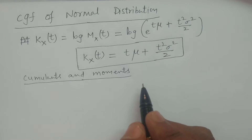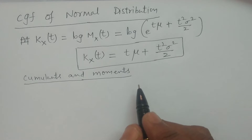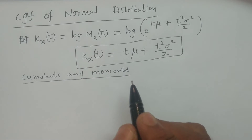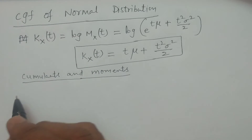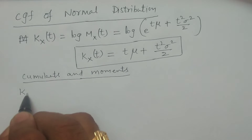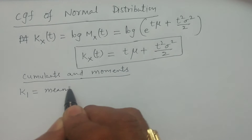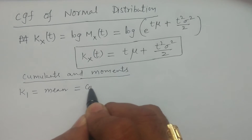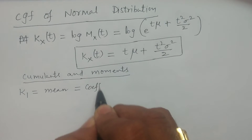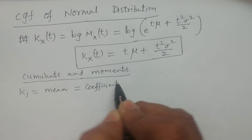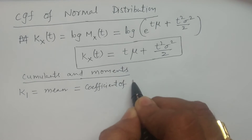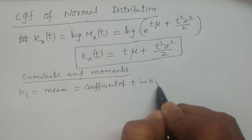Except the mean, remaining all — variance μ₂, μ₃, μ₄ — which are all central moments, we calculate from the cumulant generating function. So I start with cumulants. The first cumulant k₁ is the mean, which is equal to the coefficient of t in K(x,t).